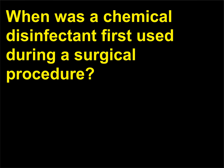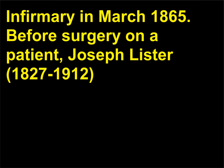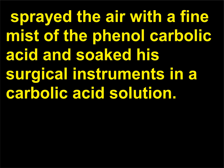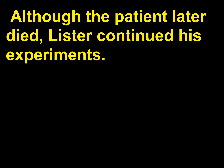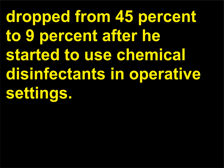When was a chemical disinfectant first used during a surgical procedure? The use of a chemical disinfectant during a surgical procedure was first documented at the Glasgow Royal Infirmary in March 1865. Before surgery on a patient, Joseph Lister (1827–1912) sprayed the air with a fine mist of phenol carbolic acid and soaked his surgical instruments in a carbolic acid solution. Although the patient later died, Lister continued his experiments. In an 1867 article in The Lancet, it was reported that Lister's postoperative surgery mortality rate dropped from 45% to 9% after he started to use chemical disinfectants in operative settings.